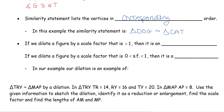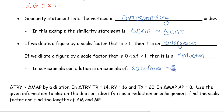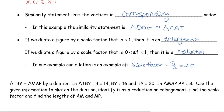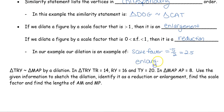If we dilate a figure by a scale factor greater than one, we are creating an enlargement. If we dilate by a scale factor between zero and one — like one-fourth, one-third, three-fourths, two-fifths — then we are making it smaller and it's going to be a reduction. In the example we just did, the scale factor was 5 halves, equal to 2.5, which is greater than one, so the triangle got larger — making it an enlargement.